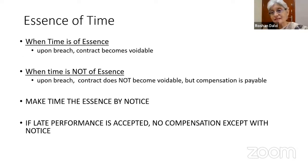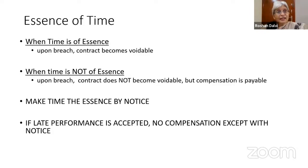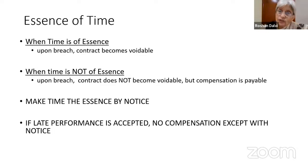As far as time is concerned, it may be in some specified time or any reasonable time. When time is the essence of the contract is extremely important. When the time is of the essence, upon breach, the contract becomes voidable. So if somebody has to complete construction within six months and does not do it, the other party can say, now I don't want to proceed. When time is not of the essence, if the contract is not performed within the required time, it does not become voidable.